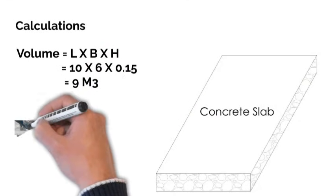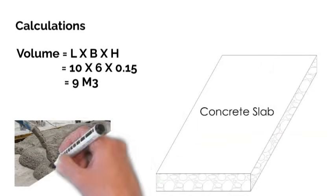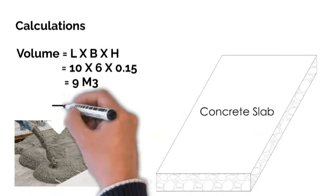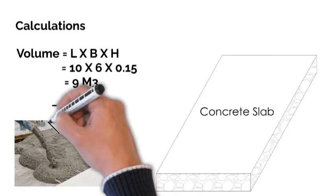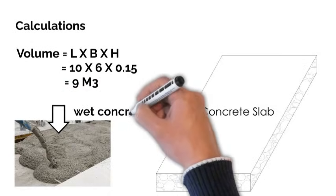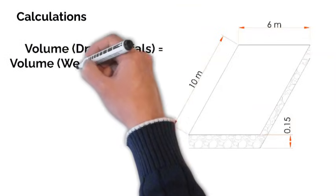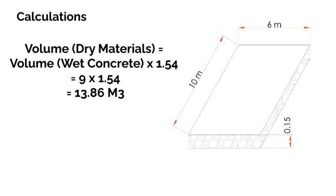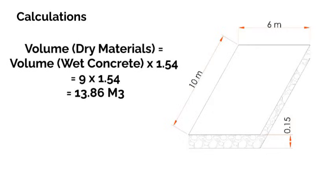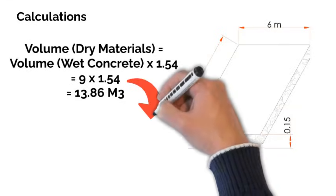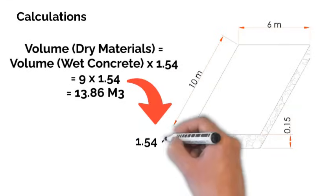This value represents the volume of the wet concrete that is already mixed. Therefore, the volume of the dry materials will be equal to the volume of wet concrete, which is 9, multiplied by 1.54, which gives us 13.86 cubic meters. But why 1.54? What is this factor for? Just follow along with me and I will explain why in a bit.